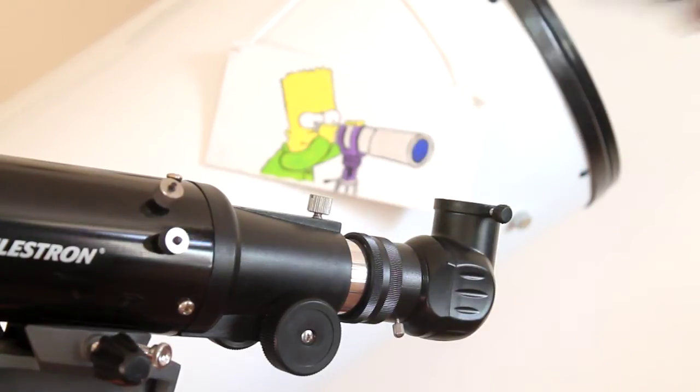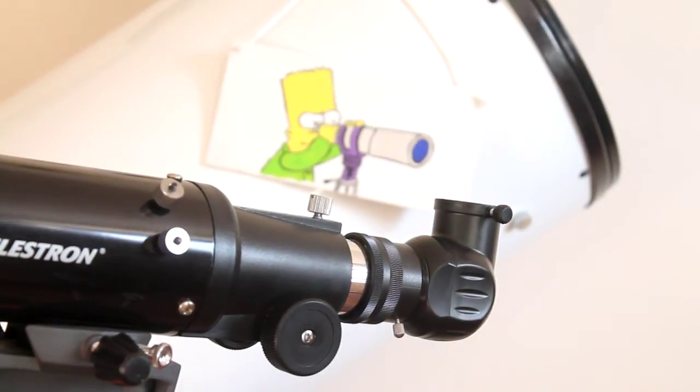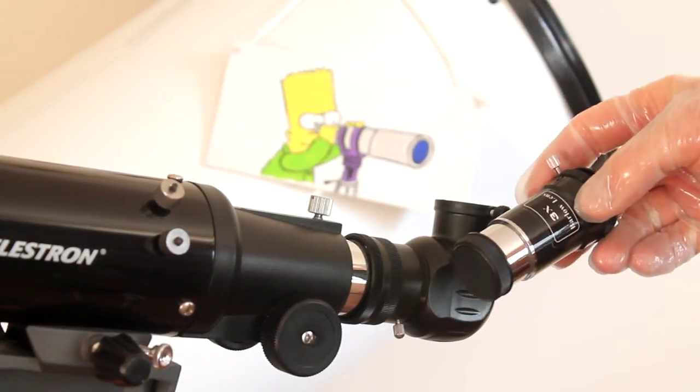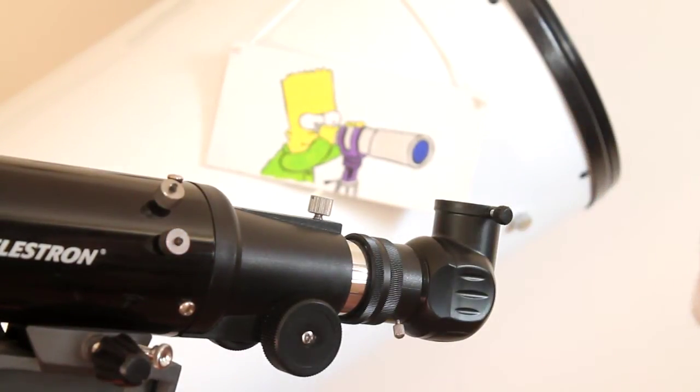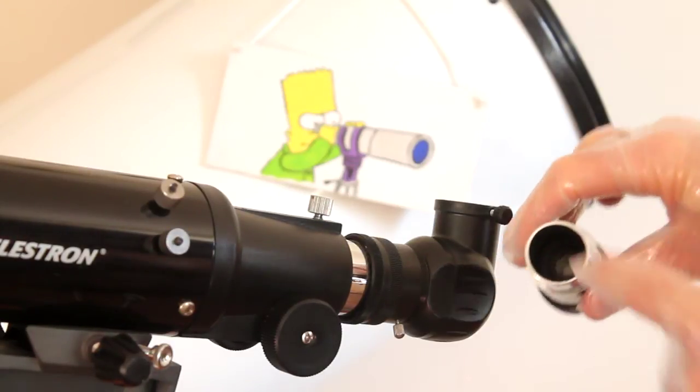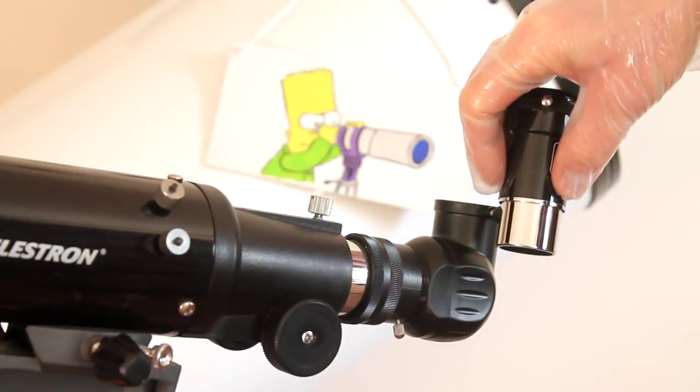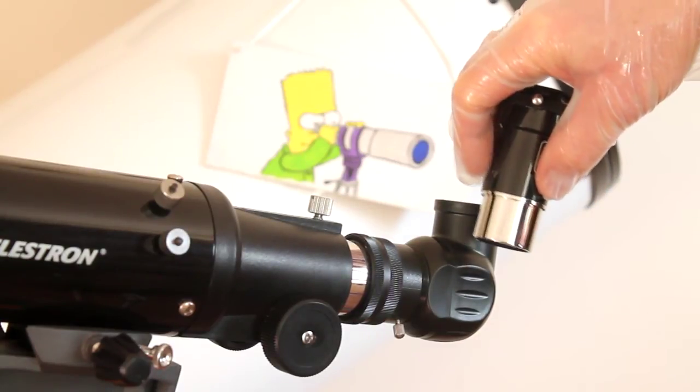Whereas this other short tube three times Barlow lens - the lens element is not at the end, it's halfway down. So you still might have an issue with focus using that type of Barlow.